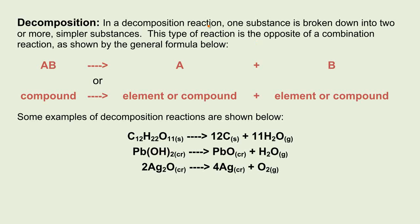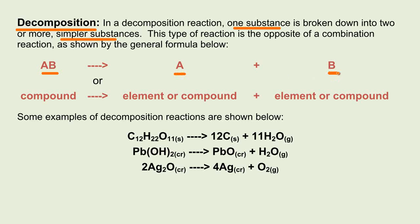The next major type of reaction is decomposition. You can think of decomposition as the exact opposite of a combination reaction, where one substance is broken down into two or more simpler substances. So we have a compound that goes through a reaction and forms the products A plus B, where A can be an element or a compound, and B can be an element or a compound.